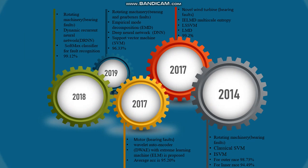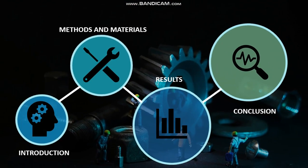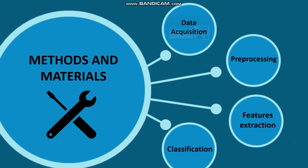In 2018, a dynamic recurrent neural network classifier for bearing fault recognition in rotating machinery was proposed, and the maximum accuracy was 99.12%. In 2019, empirical mode decomposition, deep neural network, and SVM (Support Vector Machine) were used for bearing and gearbox faults in rotating machinery, and the accuracy was 96.33%. This concludes the literature review, moving into methods and materials.